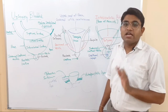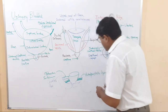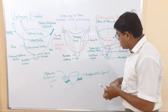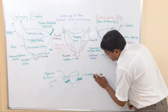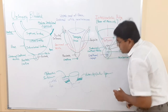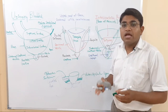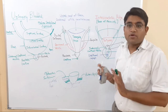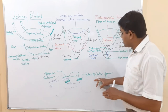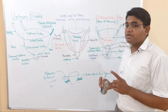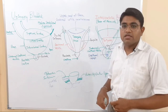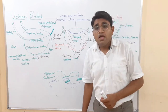In females, all the same structures are related to the inferolateral surfaces with one difference: since the prostate is not present in females, instead of the puboprostatic ligament there is a pubovesical ligament, which is directly attached to the vesicle rather than the prostate.